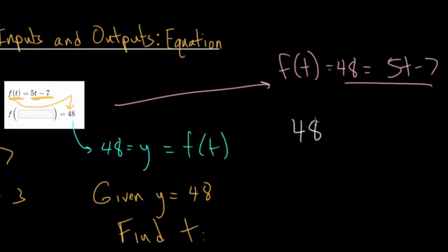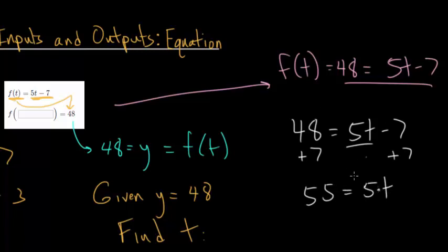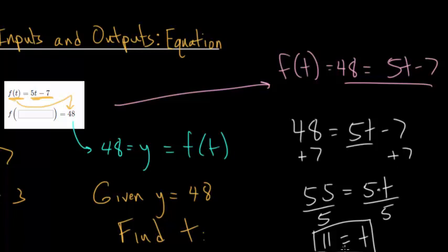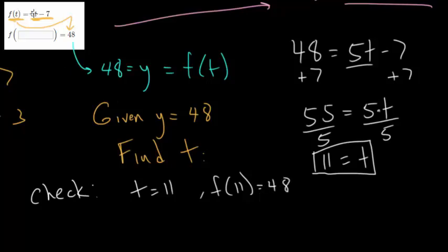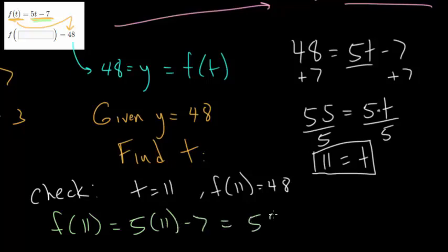So 48 equals 5t minus 7. We need to solve for t, so let's add 7 to each side. You get 55 equals 5t, and then divide each side by 5 to get rid of the multiplication. You get t equals 11. To check your work, plug it back in: f(11) gives 5 times 11 minus 7, which is 55 minus 7, and that does give you 48. So we checked it and this is the correct answer.